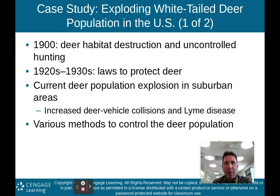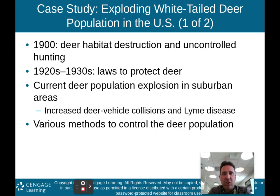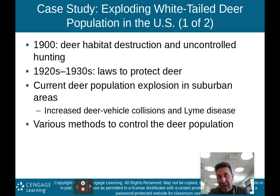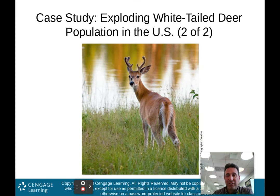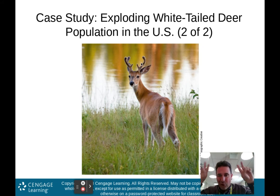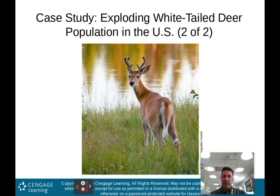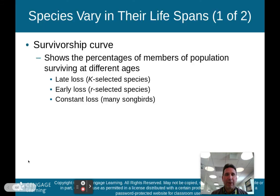Case study: the exploding white-tailed deer population in the US. Deer habitat destruction and uncontrolled hunting in the 1920s and 1930s led to laws to protect deer. The result has been a current deer population explosion in suburban areas. This has increased deer-vehicle collisions and increased Lyme disease, because ticks from deer can give you Lyme disease. There are various methods to control the deer population — this is definitely an issue we see in suburban areas.